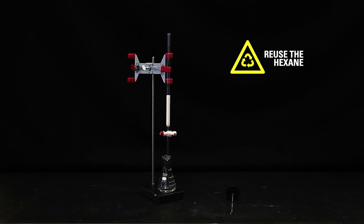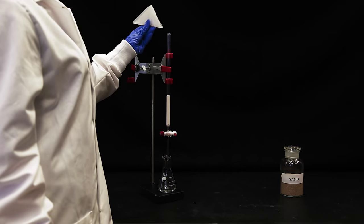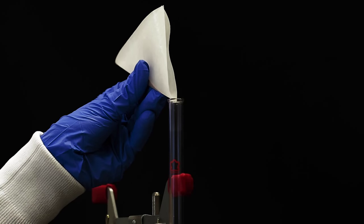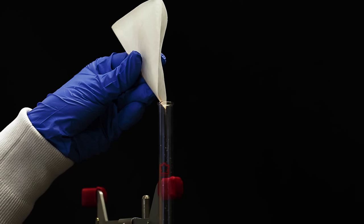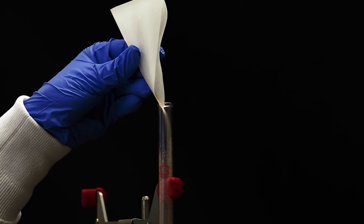Make sure to reuse the hexane collected to prevent wasteful use of solvent. Add a layer of sand to the top of the alumina. This keeps the alumina from being disturbed when more solvent is added to the column. It only takes a small amount of sand.